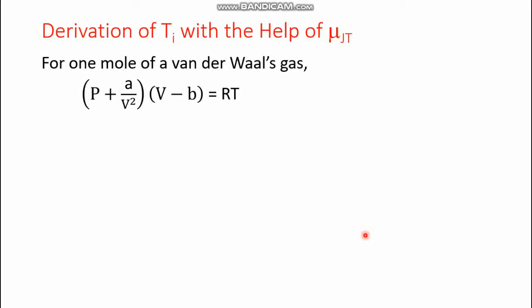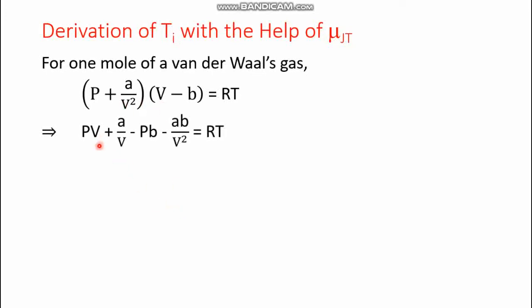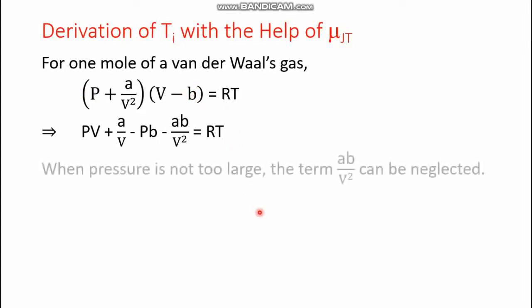We start from one mole of van der Waals gas. The equation is (p + a/v²)(v − b) = RT. Let's multiply these two factors with each other. The result is: pv + a/v − pb − ab/v² equals RT, where we first multiply by v and then by minus b.